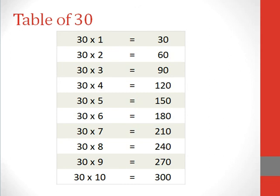Table of 30. 30 1s are 30, 30 2s are 60, 30 3s are 90, 30 4s are 120, 30 5s are 150, 30 6s are 180.